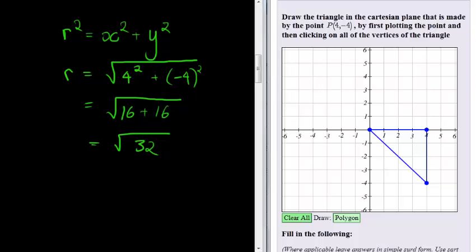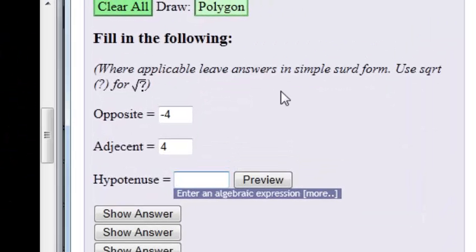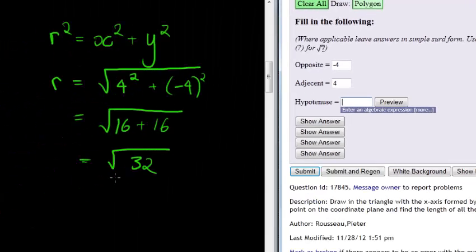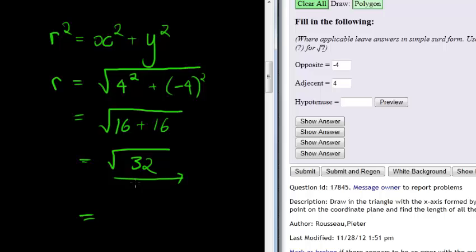Very important here, they tell me that I have to leave my answer in simple surd form. Where applicable, leave your answer in simple surd form. Use square root, sqrt, for the square root of that number. So if I want to write this in simple surd form, I will first have to take out all of the complete squares.